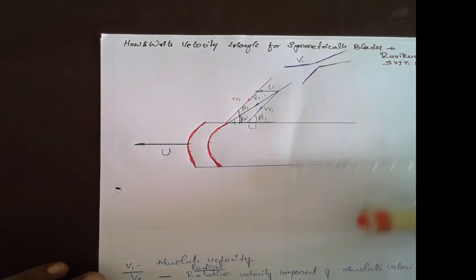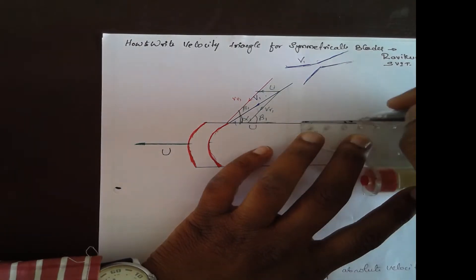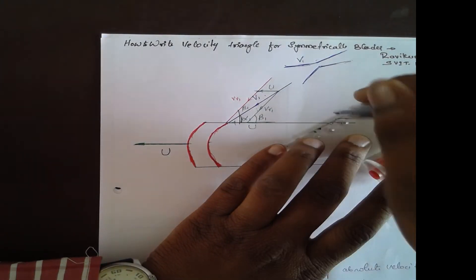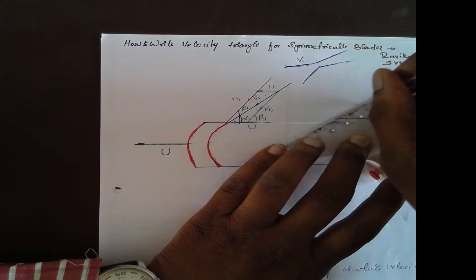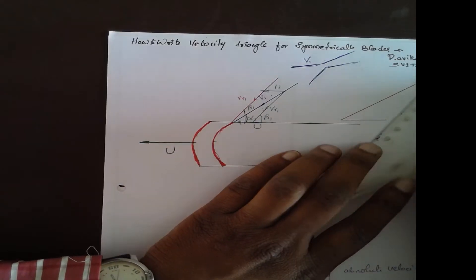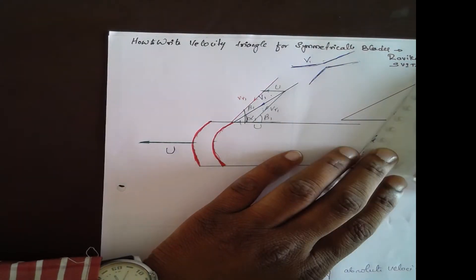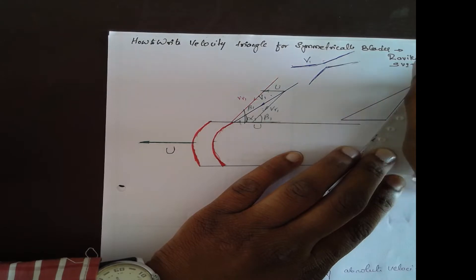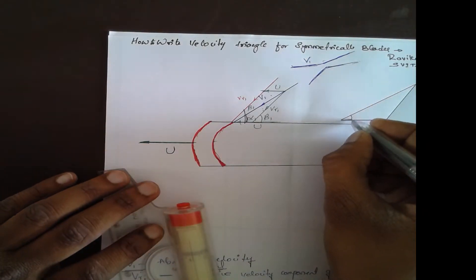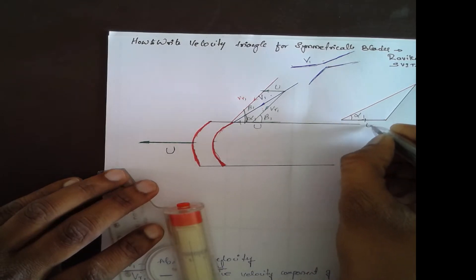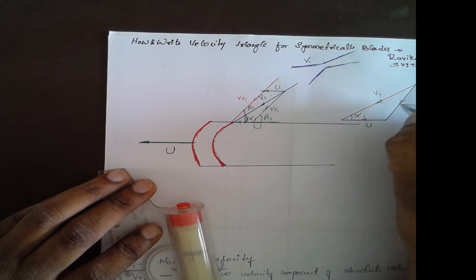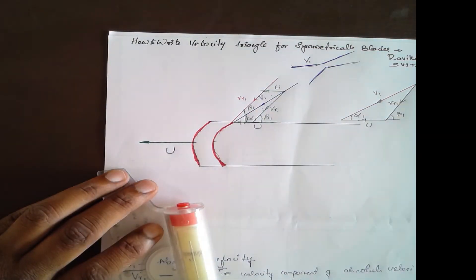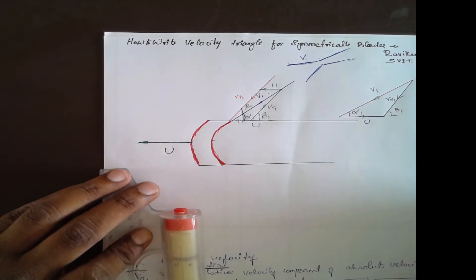If you consider the lower velocity triangle, it looks like this: from one end you have u, then v1, then vr1. The angle between u and v1 is alpha1, and the angle between u and vr1 is beta1. This is the lower inlet velocity triangle.